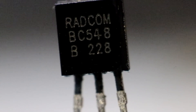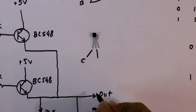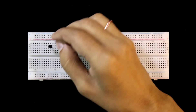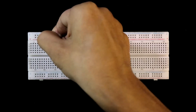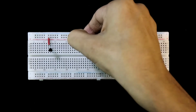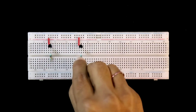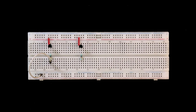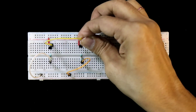Now we will see this circuit on the breadboard. This is the BC548 transistor: this pin is the collector, the middle pin is the base, and this pin is the emitter. Placing the first transistor and here is the second one. The collectors of the transistors are connected to plus 5V. With the base of each transistor we connect a 10K ohms resistor. This will be input A and this will be input B. Both the emitters are connected together.